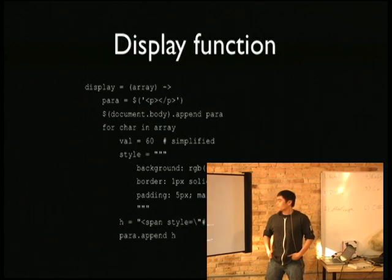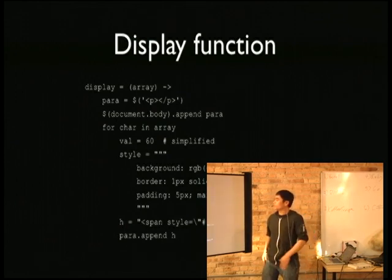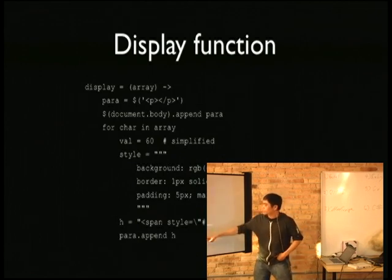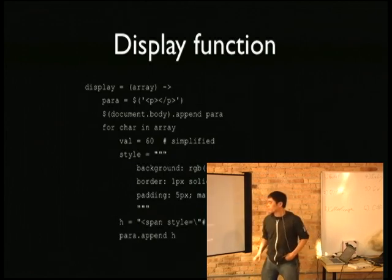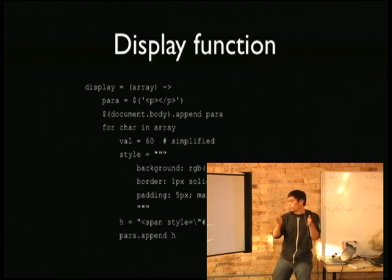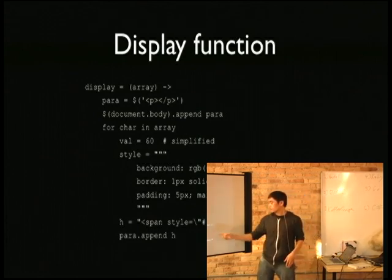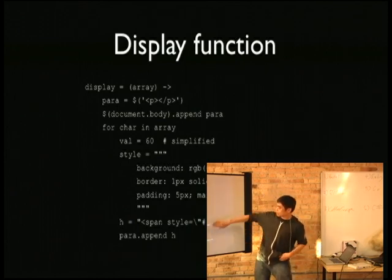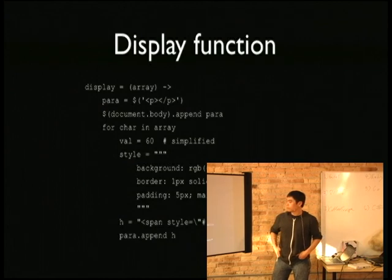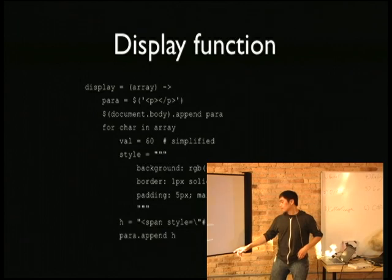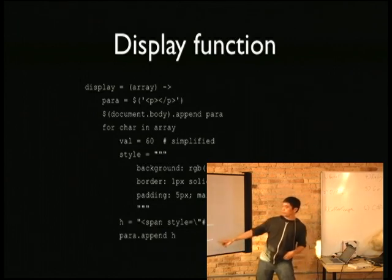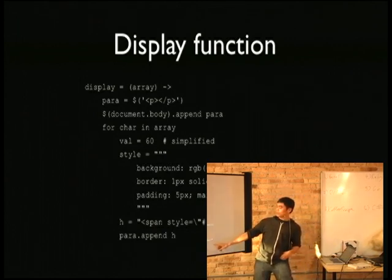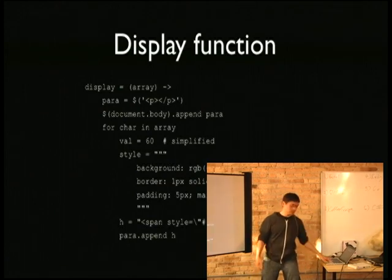This is the display function. Here is a multi-line string where it says 'style equals' with triple quotes. It's slightly different because it actually looks at the indentation, so because all these lines are at the same indentation level, when it prints out there won't be any extra indentation. And then the last thing is string interpolation in the second-to-last line — you need double quotes for that, and that's basically from Ruby.